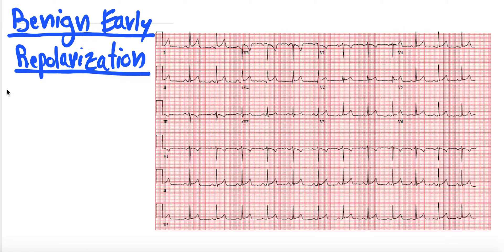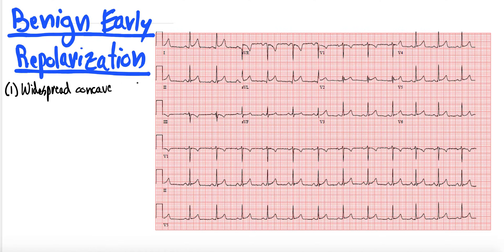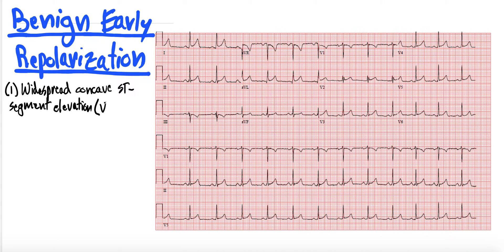To start, I wanted to talk about several suggestive criteria. Benign early repol gives you this widespread concave ST segments that are elevated. So widespread concave ST segment elevation. It's most prominent and most easy to see in V2 through V5 — some of your precordial leads, the anterior ones.